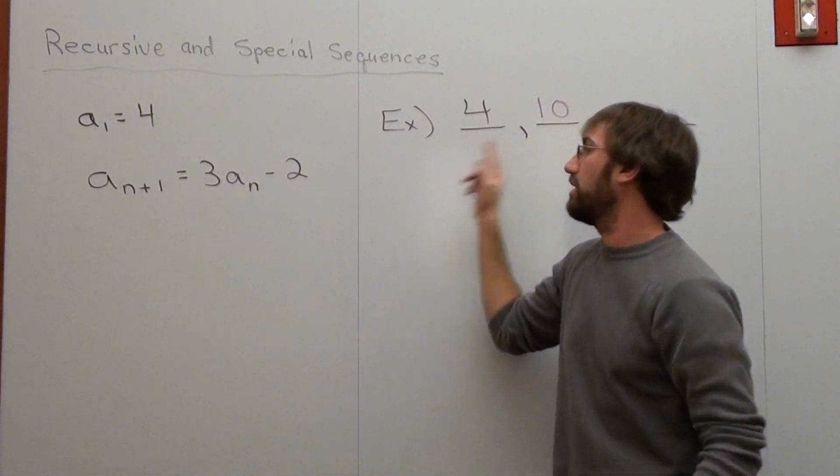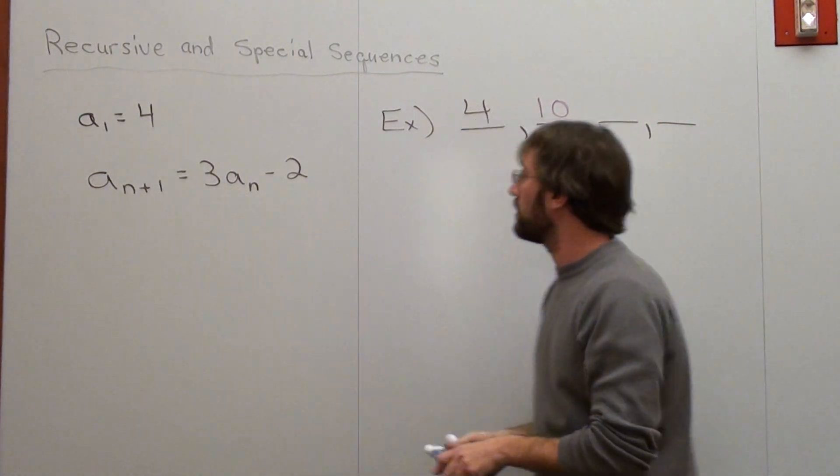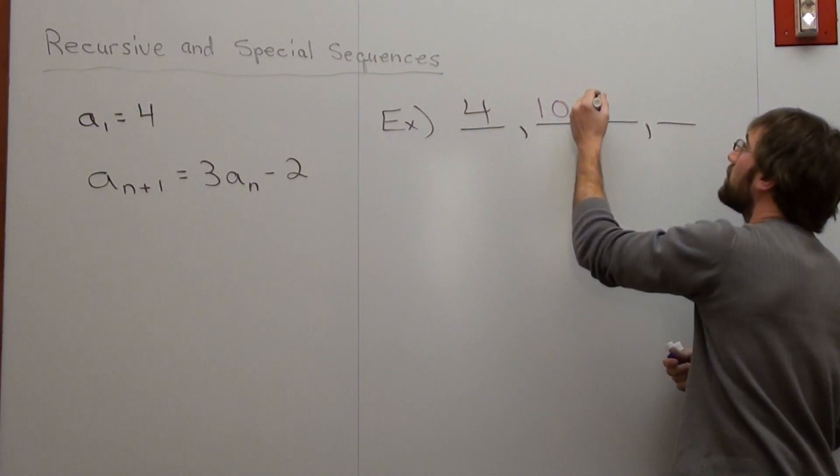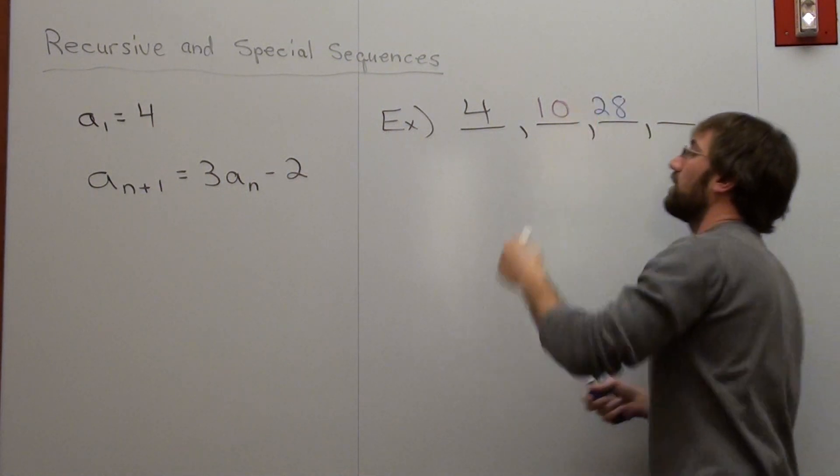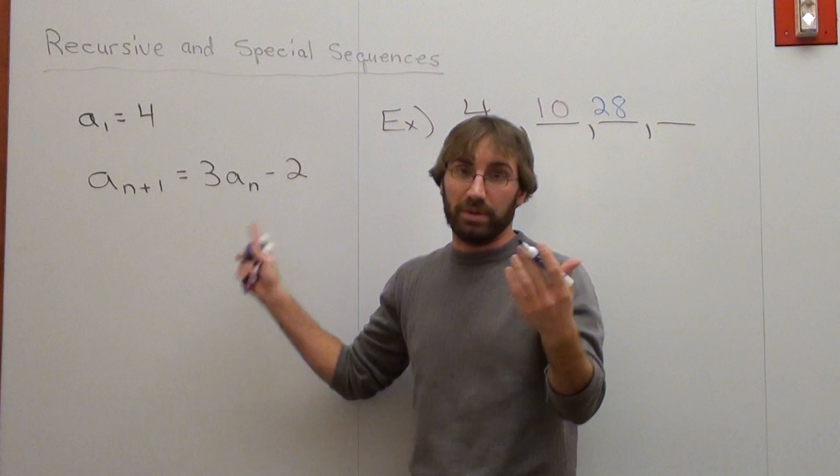Do we take the 10 next? Yeah. 3 times 10 is 30, minus 2 is 28. 3 times 28 is 84, 84 subtracted by 2 is 82.